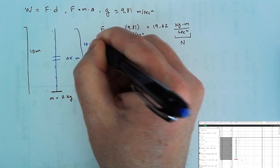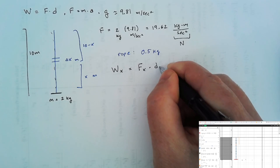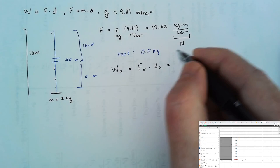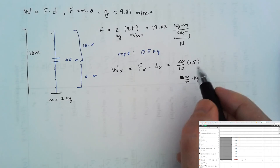the work done on this little x slice would be the force required to move that little x slice times the displacement of that x slice. The force would be the mass of this slice, which would be delta x meters out of 10 meters, times the total mass of the rope. So we have meters over meters times kilograms. This gives us a mass times the acceleration due to gravity,